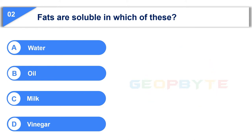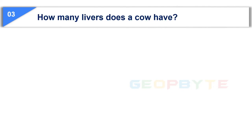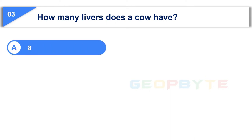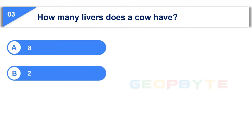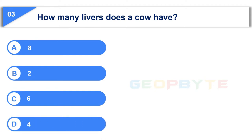Your time is up and the correct answer is Option A: Water. The third question is: how many livers does a cow have? Option A: Eight. Option B: Two. Option C: Six. Option D: Four. Your time starts now.